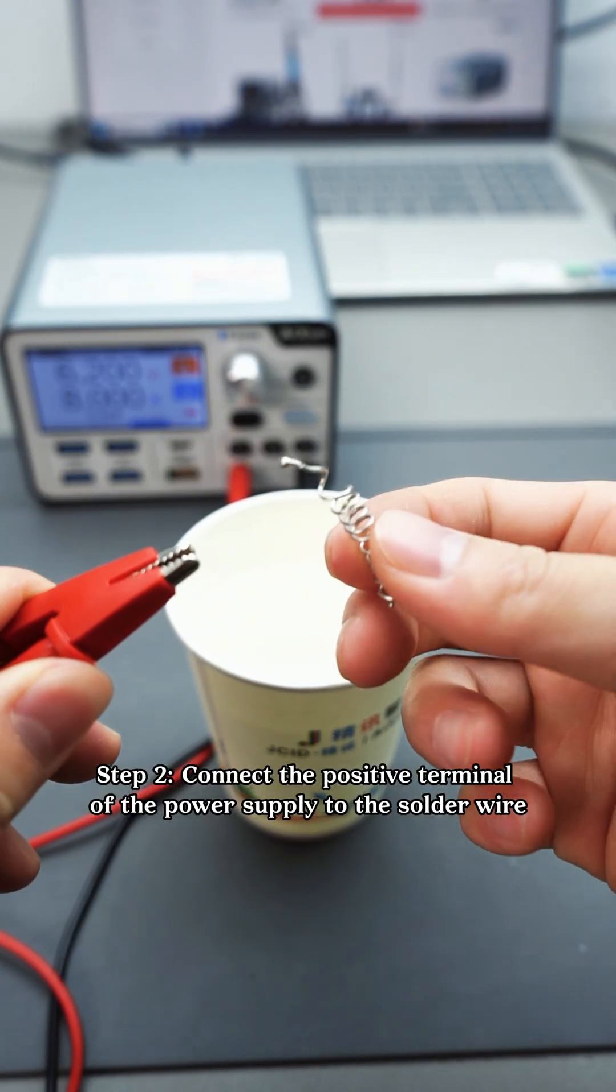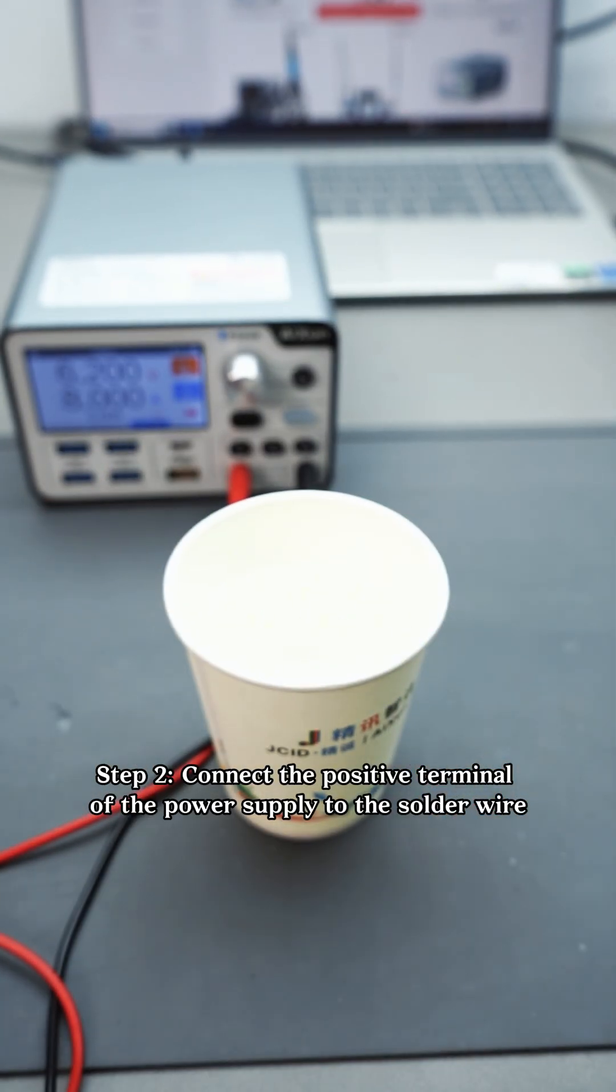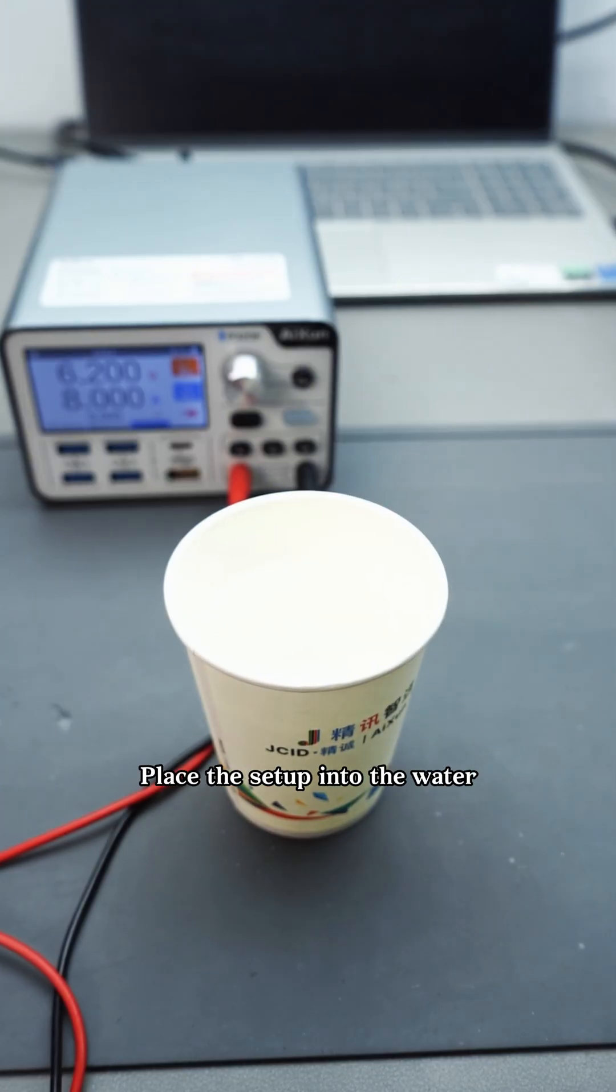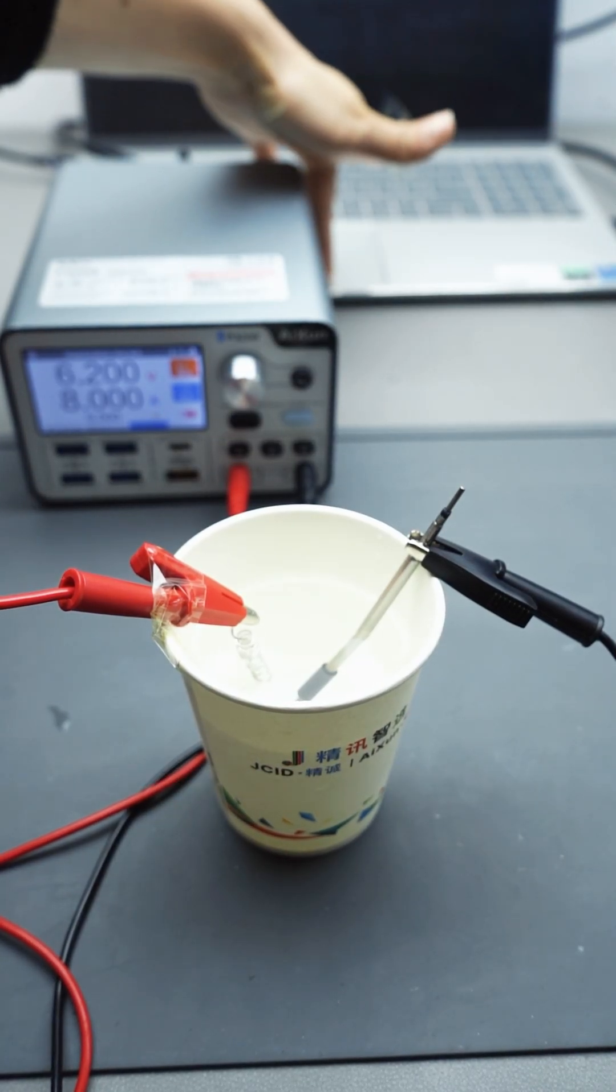Step 2: Connect the positive terminal of the power supply to the solder wire and the negative terminal to the soldering iron tip. Place the setup into the water.